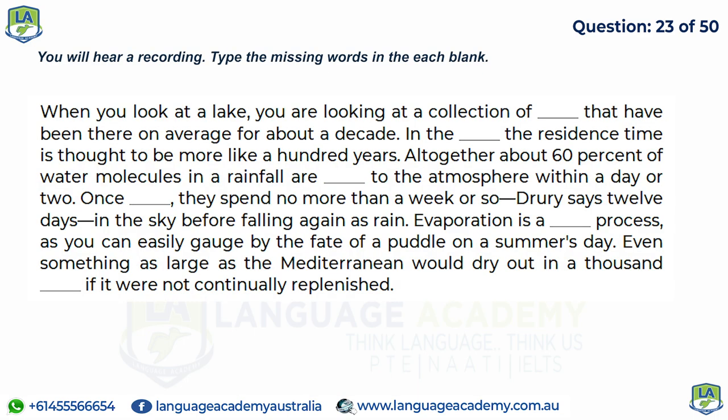When you look at a lake, you are looking at a collection of molecules that have been there on average for about a decade. In the ocean, the residence time is thought to be more like a hundred years. Altogether, about 60 percent of water molecules in a rainfall are returned to the atmosphere within a day or two. Once evaporated, they spend no more than about 12 days in the sky before falling again as rain. Evaporation is a swift process — even something as large as the Mediterranean would dry out in a thousand years if not continually replenished.